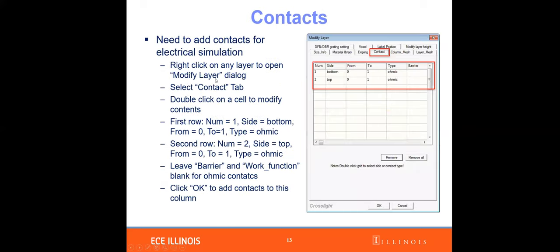Finally, we specify our contacts. In the contact column, the bottom contact is N-contact and the top is P-contact. We assume ohmic contact, so we can leave the barrier and work function empty. If you want to study a Schottky contact in your final project, you'll need to specify the Schottky barrier and work function in those columns. For ohmic contact, you don't need to provide any value for barrier or work function.